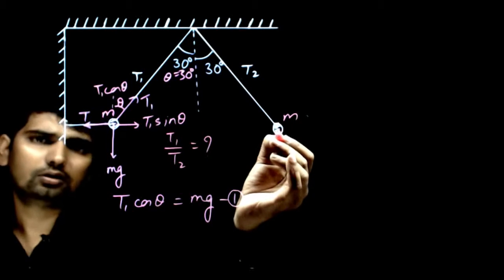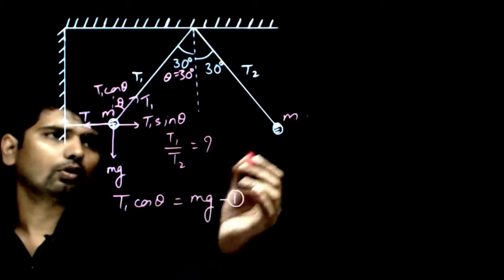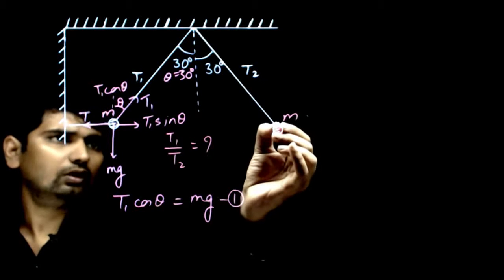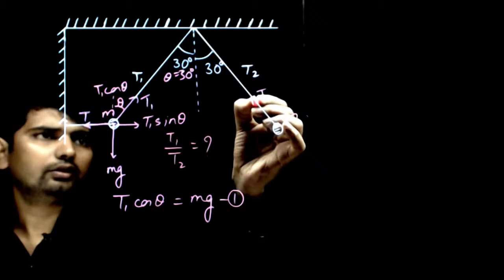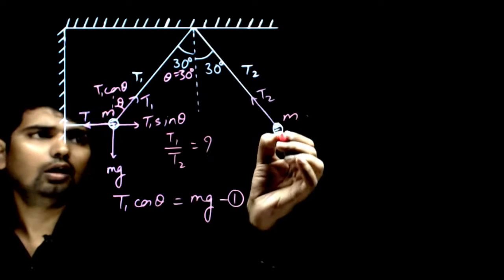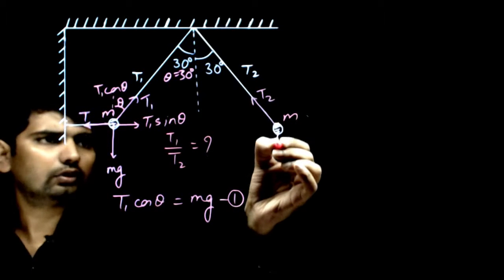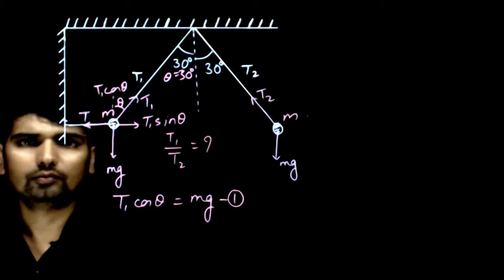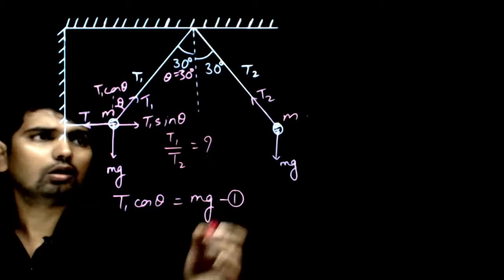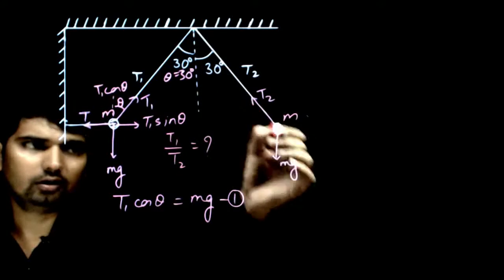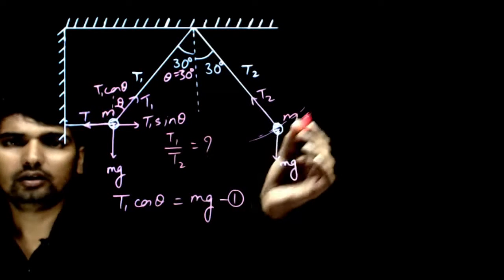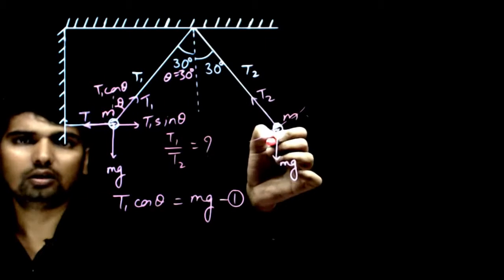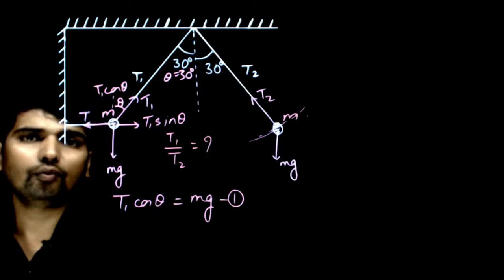If I talk about this ball, the second ball, what is happening? One force T2 is acting in this direction and another force Mg is acting in downward direction. This ball cannot move along the string because it is oscillating, it is going to accelerate in the direction perpendicular to the string, so there should be no force, no net force along the string.